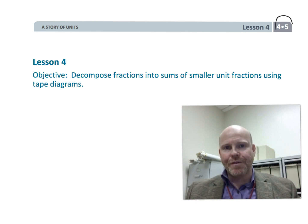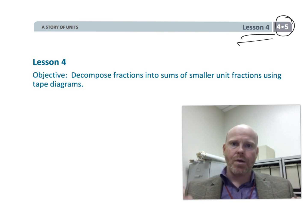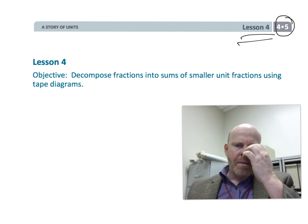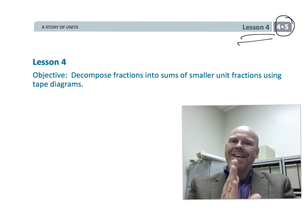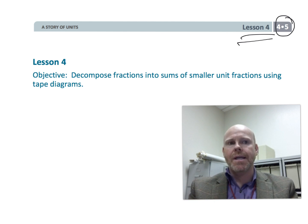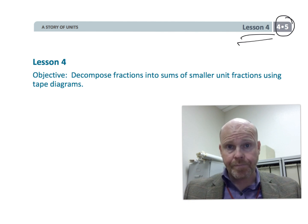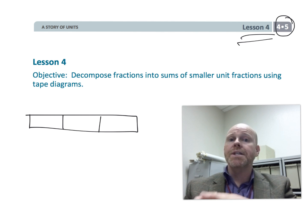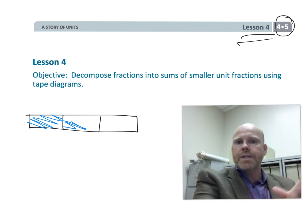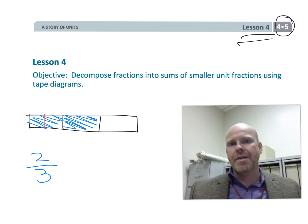This is fourth grade module 5 lesson 4. In this lesson students are going to be finding equivalent fractions. We're going to be doing it through taking a fraction, representing it with a tape diagram, and then cutting it up and decomposing it into smaller unit fractions. It's not the standard algorithm at all, but we're continuing the theme of teaching for meaning so that down the road when students are ready to learn the standard algorithm it'll make sense rather than just be some rule that students blindly follow.